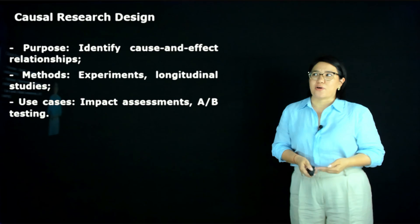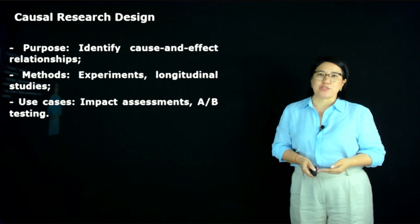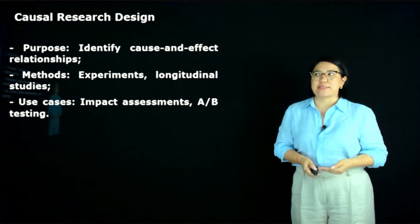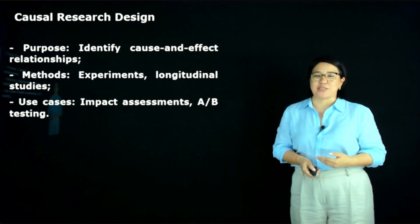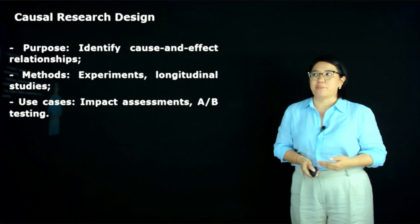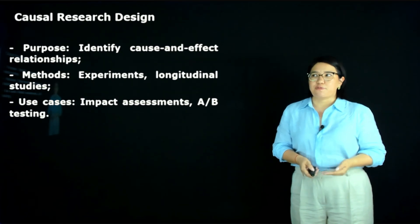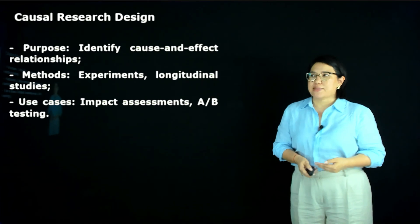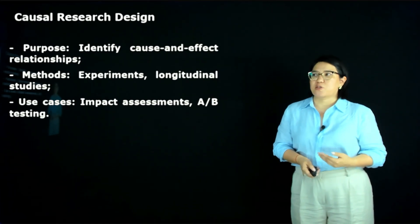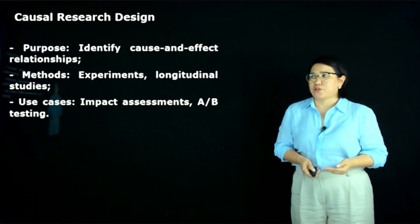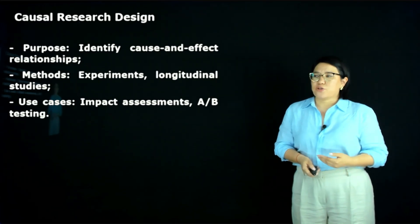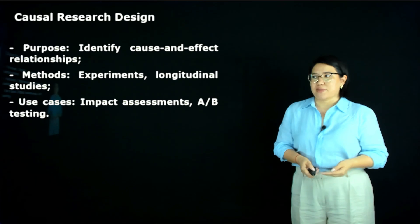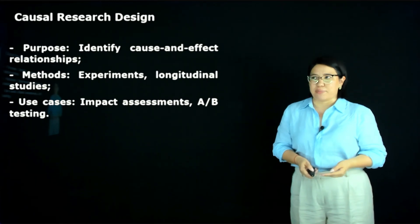The next type is causal research design. Its purpose is to identify cause-and-effect relationships. Methods include experiments and longitudinal studies. Use cases include impact assessment and testing.